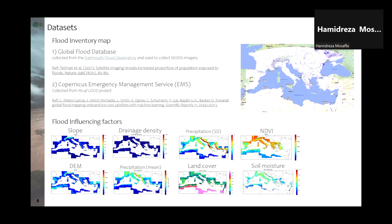For the flood inventory maps, we use two datasets: first, the Global Flood Database — an open-access dataset covering flood events from 2018 onward — and second, the Copernicus Emergency Management Service flood dataset. We combine both datasets and separate them by season. We also use eight different flood-influencing factors: precipitation, soil moisture, land cover, drainage density, slope, DEM, variations of precipitation, and NDVI, all used as model inputs.